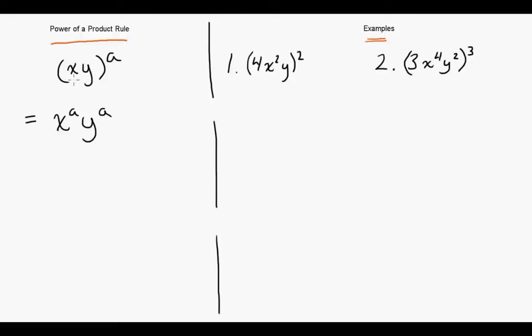Looking at the generic form, if we have two numbers x, y and then all to the exponent a, we can basically just distribute that a throughout the bracket. So we get x to the exponent a times y to the exponent a.